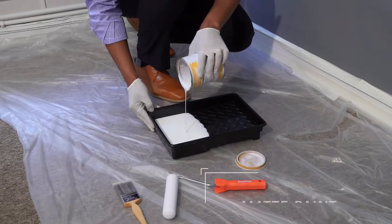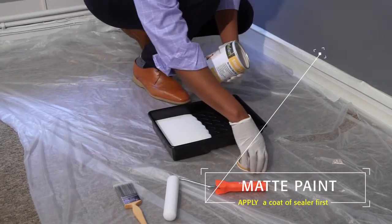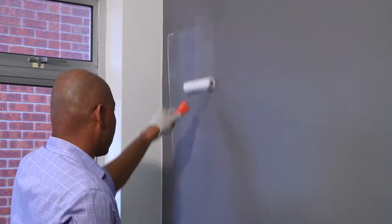If you are applying SmartWall Paint Clear over a matte paint, apply a coat of sealer first. However, we recommend that you use a mid to high gloss coloured paint.